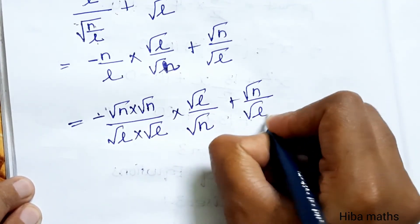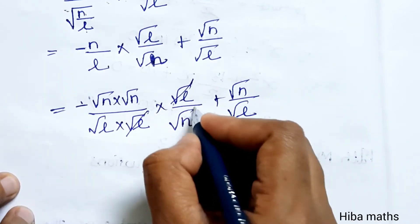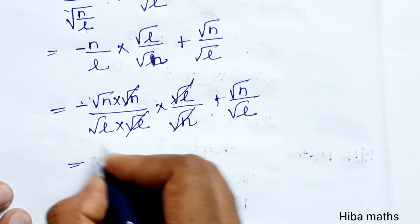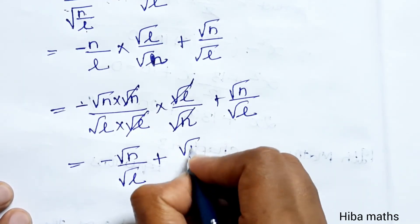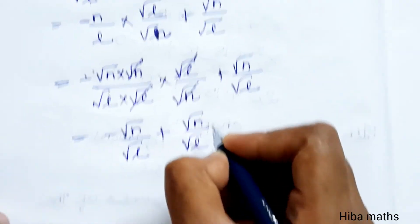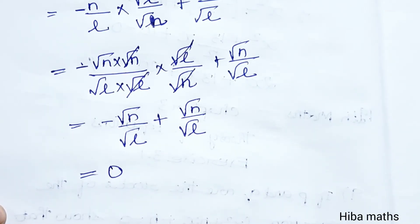√(n/l) cancel. √(n/l) cancel, √(n/l) down here, plus √(n/l) or minus term or plus term, which is equal to 0. So now we have the answer.